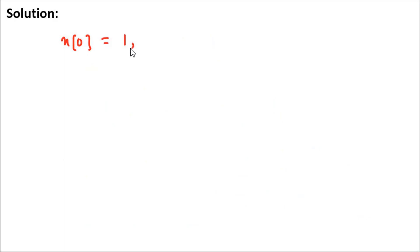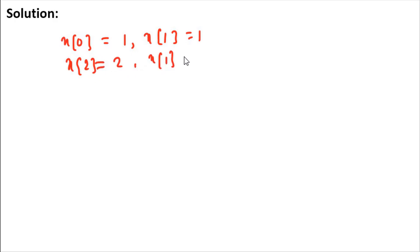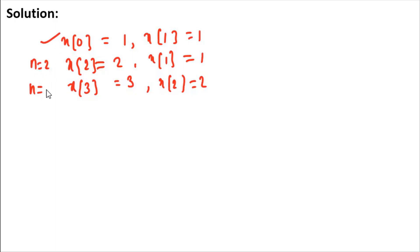So now you have: x[0] = 1 and x[1] = 1 (given), x[2] = 2 and x[1] = 1 (from n=2), x[3] = 3 and x[2] = 2 (from n=3), and x[4] = 5 and x[3] = 3 (from n=4).